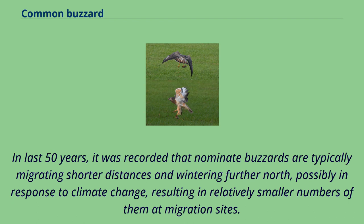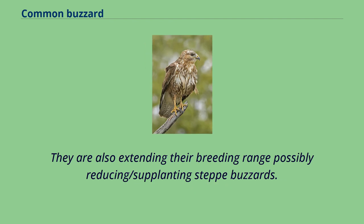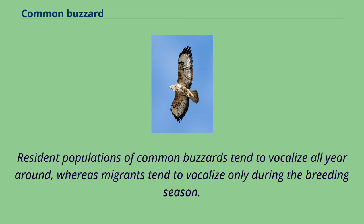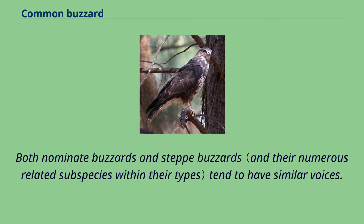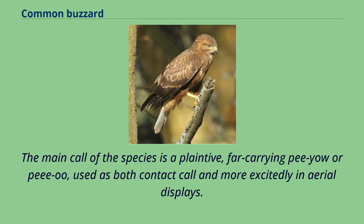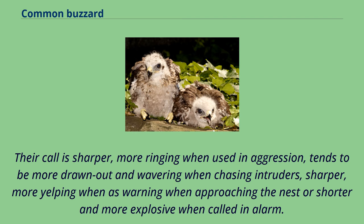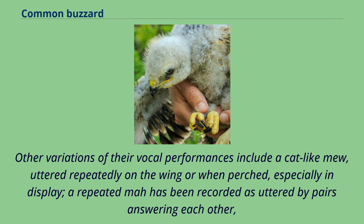Resident populations of common buzzards tend to vocalize all year around, whereas migrants tend to vocalize only during the breeding season. Both nominate buzzards and steppe buzzards tend to have similar voices. The main call of the species is a plaintive, far-carrying 'pee-o' or 'puu', used as both a contact call and more excitedly in aerial displays. Their call is sharper and more ringing when used in aggression, more drawn out and wavering when chasing intruders, sharper and more yelping as a warning when approaching the nest, or shorter and more explosive when called in alarm. Other variations include a cat-like mew uttered repeatedly on the wing or when perched, especially in display. Juveniles can usually be distinguished by the discordant nature of their calls compared to those of adults.